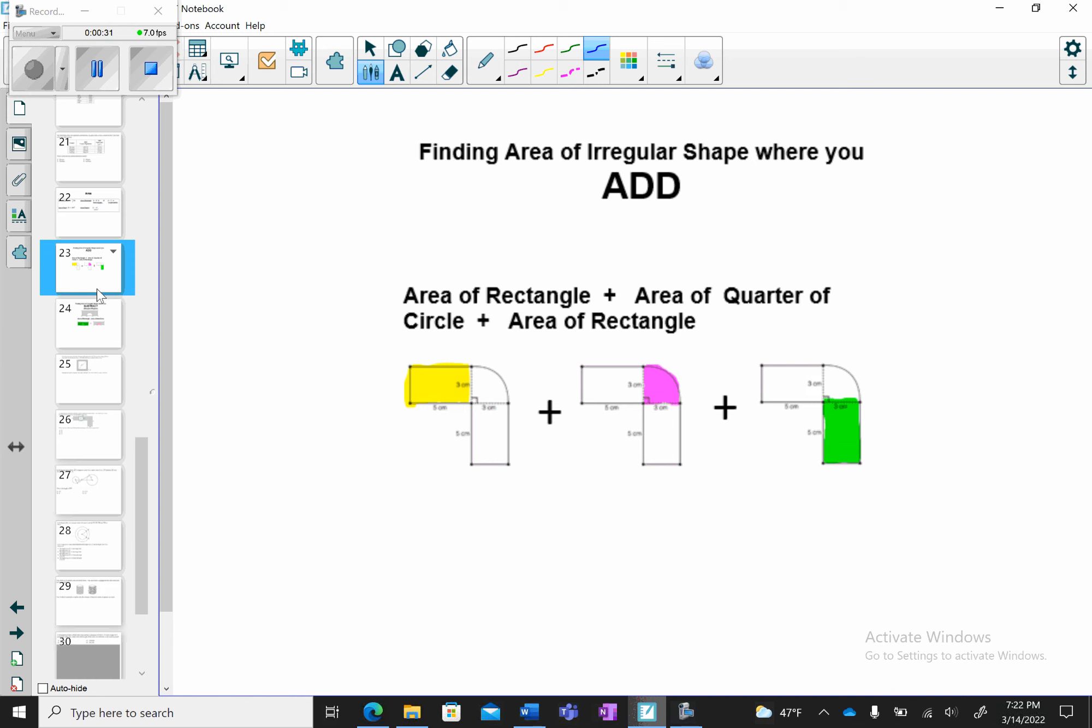Now, when it comes to finding the area of an irregular shape, when it's a diagram that looks like that, we're going to have to add. So if you notice in this diagram, we have area of a rectangle plus an area of a quarter of a circle plus the area of a rectangle. If you put that all together and add them together, you're going to get the total area.